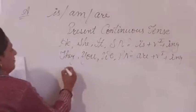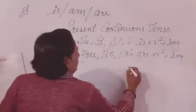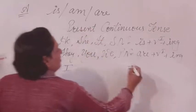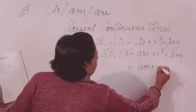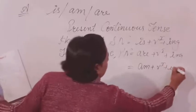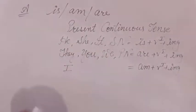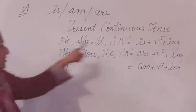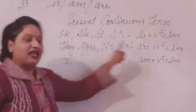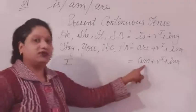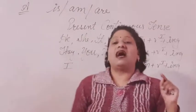Next, if your subject is I, we will use AM plus the verb in first form plus ING. So overall: with singular we use IS, with plural we use ARE, and for I we use AM — with the main verb with ING.